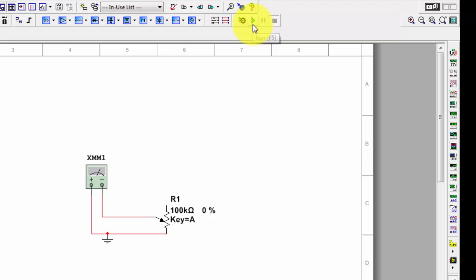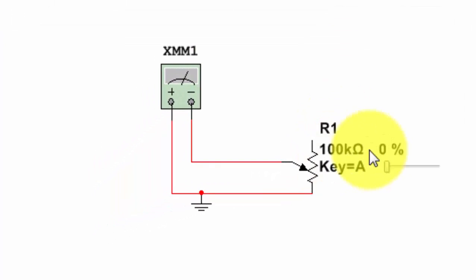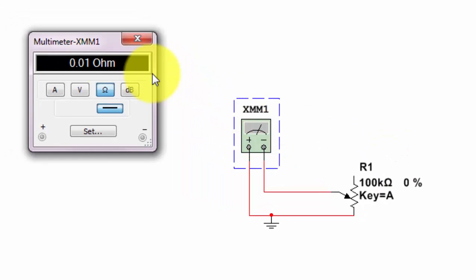Now I'm going to run the simulation. Right here you could see there's a slide dial. That slide dial is used to vary the resistance of this potentiometer. I'm going to double-click on the digital multimeter and right now it reads pretty close to zero ohms.